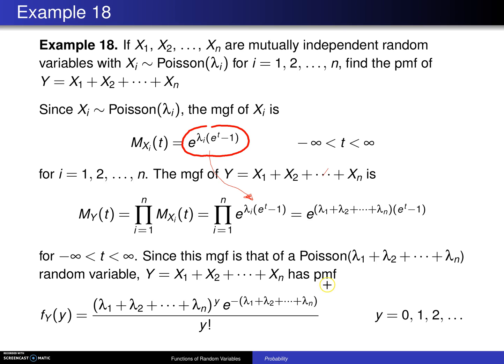So because of that, y has probability mass function f sub y of y equals the new lambda, which is the sum, to the y, times e to the minus the new lambda, which is the sum, divided by y factorial for y equals 0, 1, 2, etc.